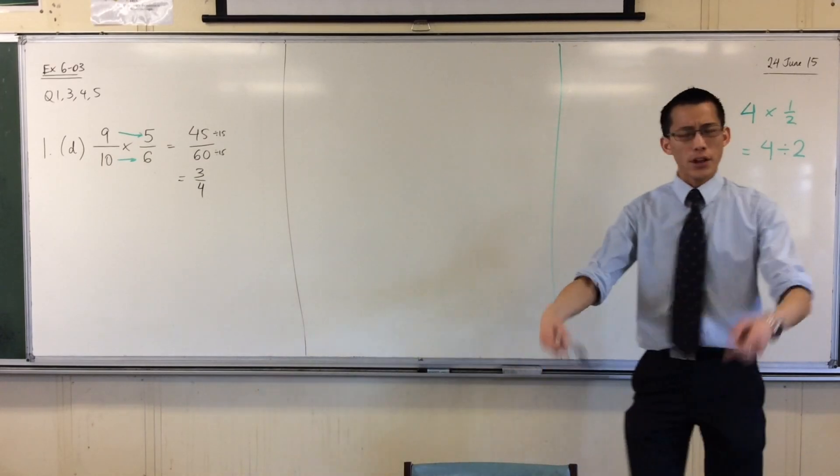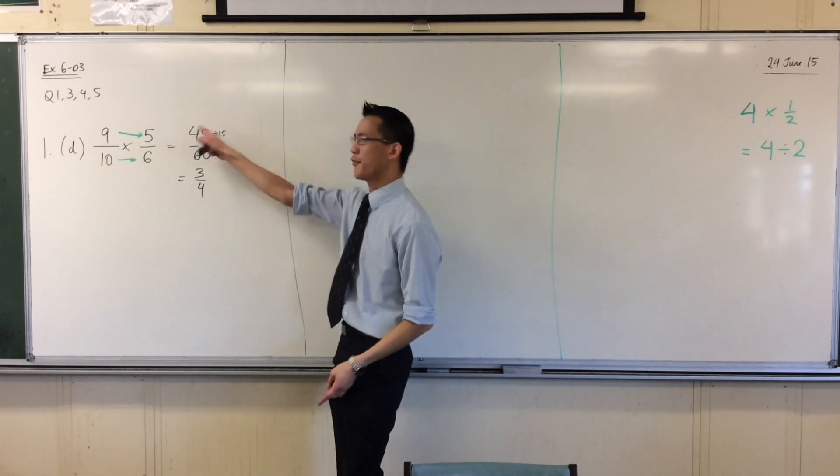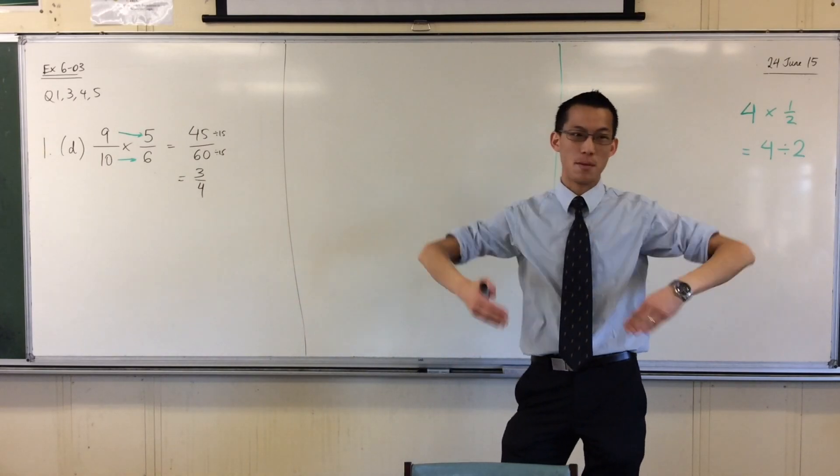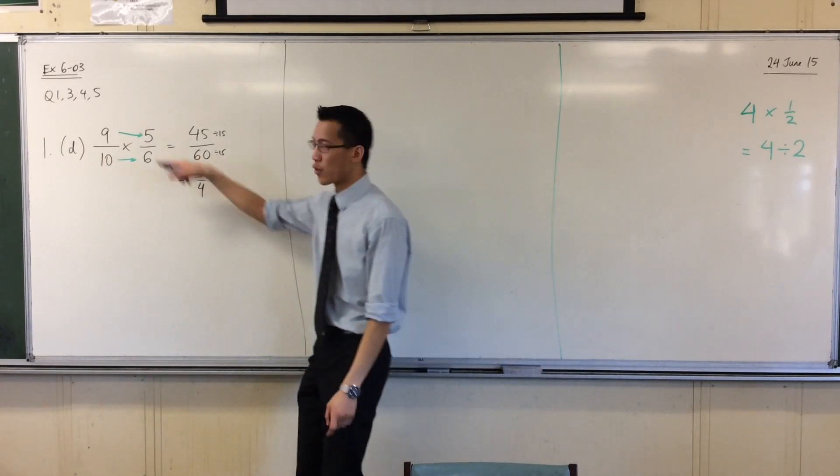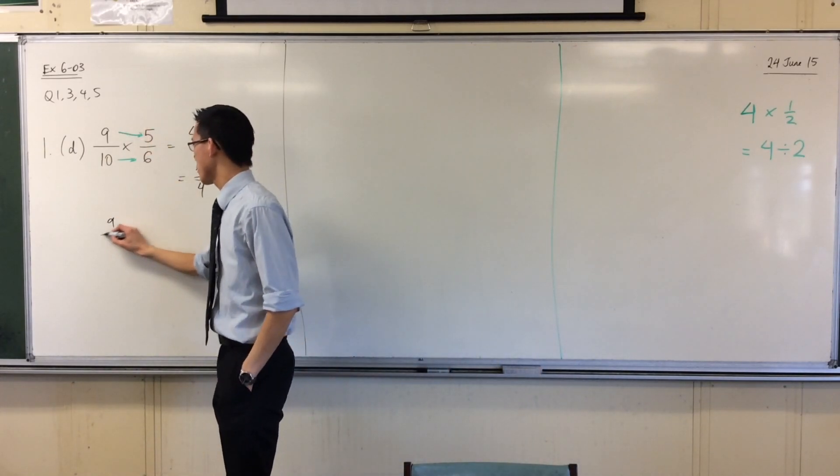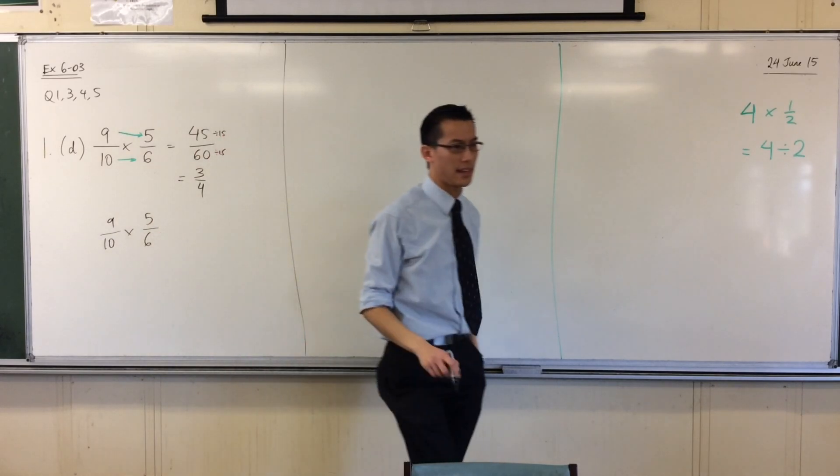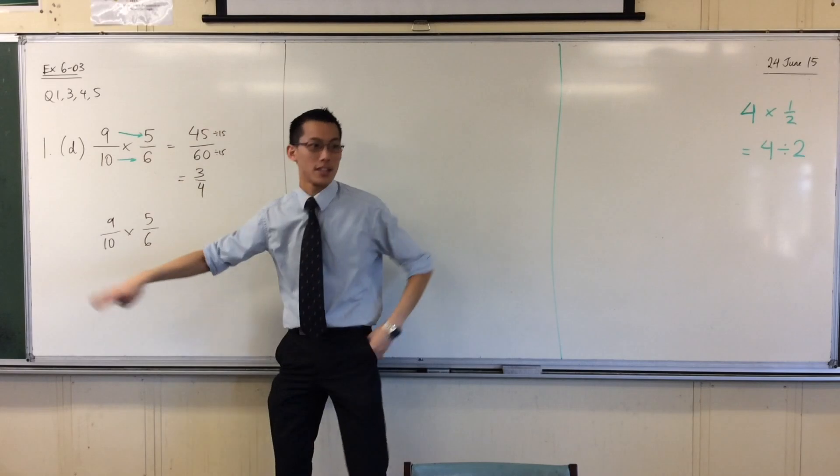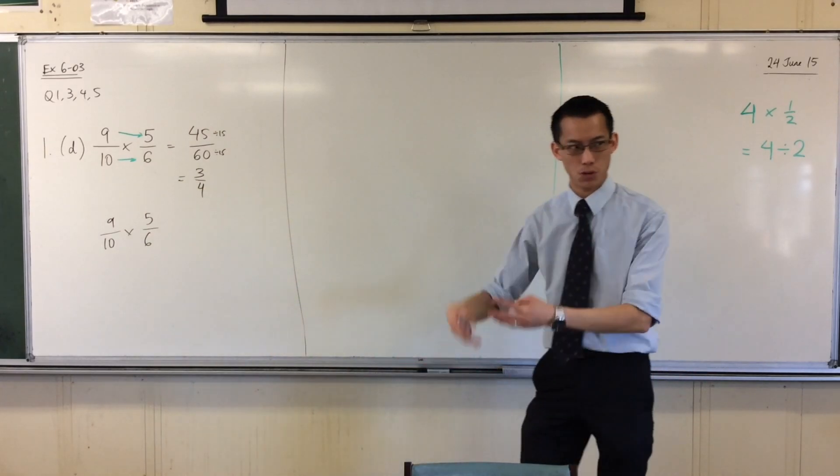However, to get to that a bit faster and to avoid these, you know, 45 and 60, they're not so bad. But sometimes the numbers on the numerator and denominator, they can get ginormous, right? So here's what I would recommend instead. Rewind. Go back to the original question. Before you multiply anything, do this simplified step. Do it first. Make the numbers smaller before you multiply rather than doing it afterwards.